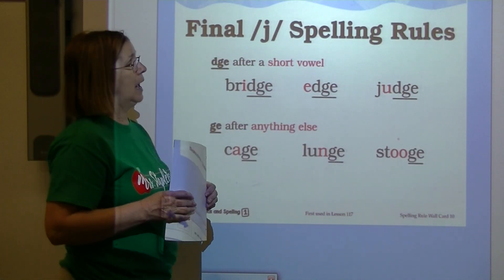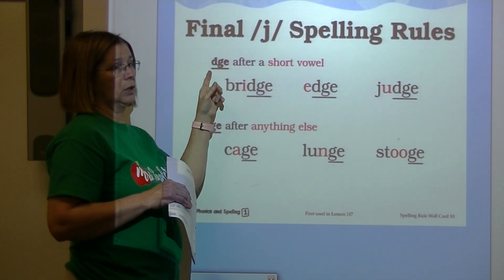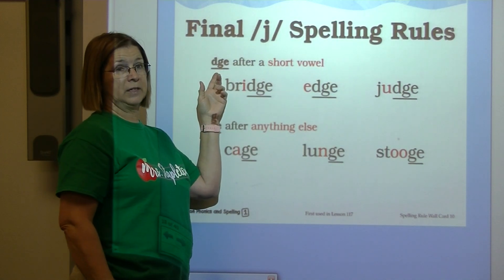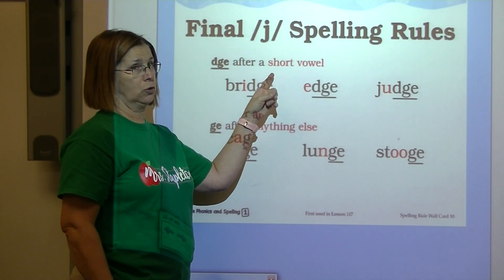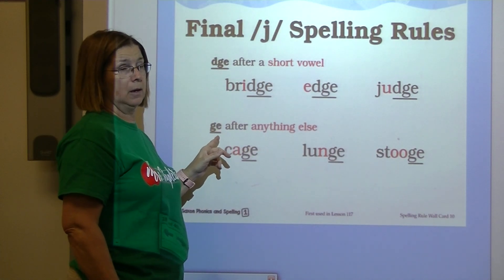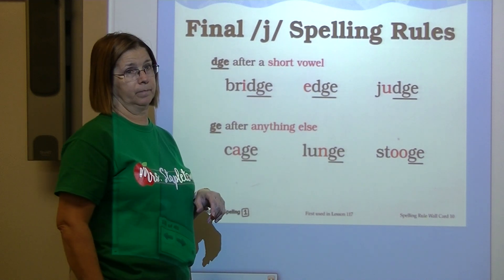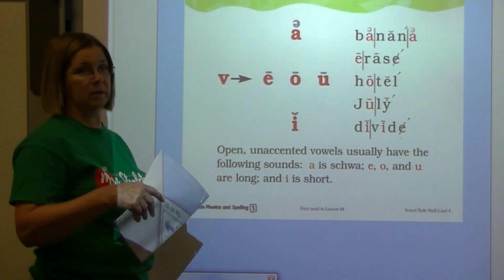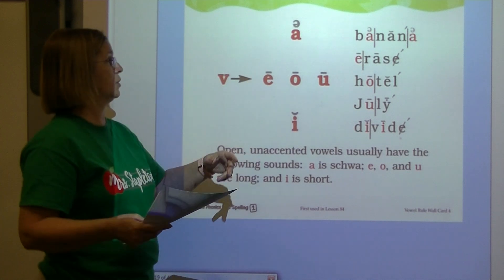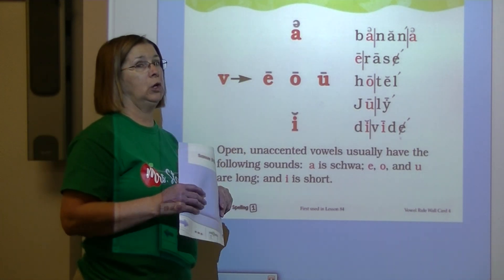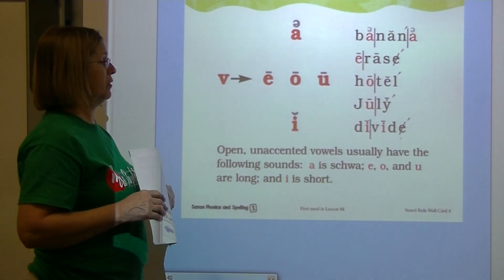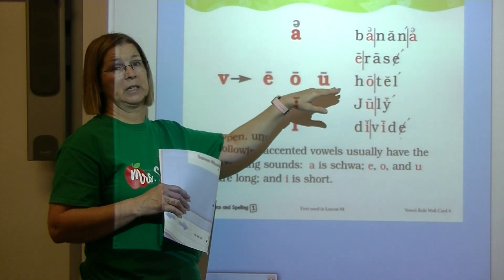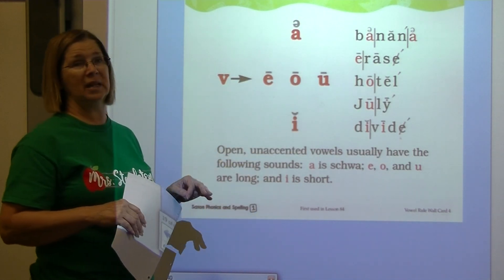When spelling j at the end of a word: trigraph DGE comes directly after a short vowel, but GE comes after anything else. Open unaccented vowels usually have the following sounds: A usually has the schwa sound; E, O, and U usually say their long sound; and I usually says its short sound.